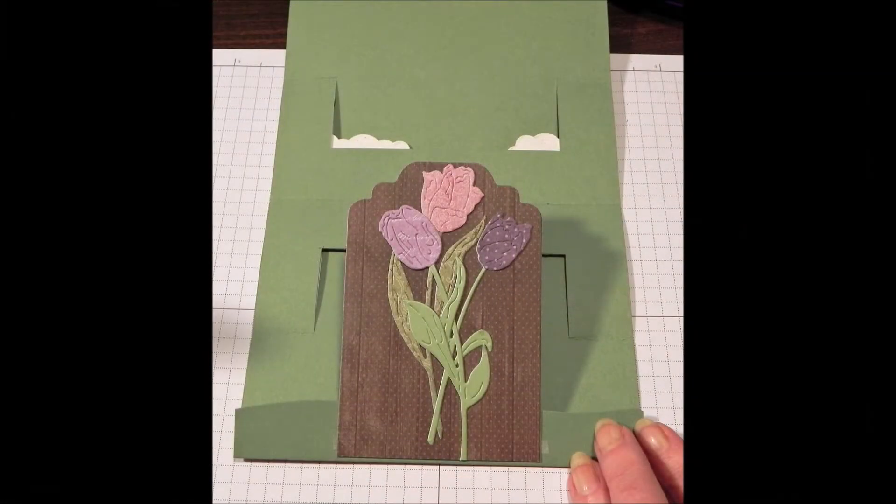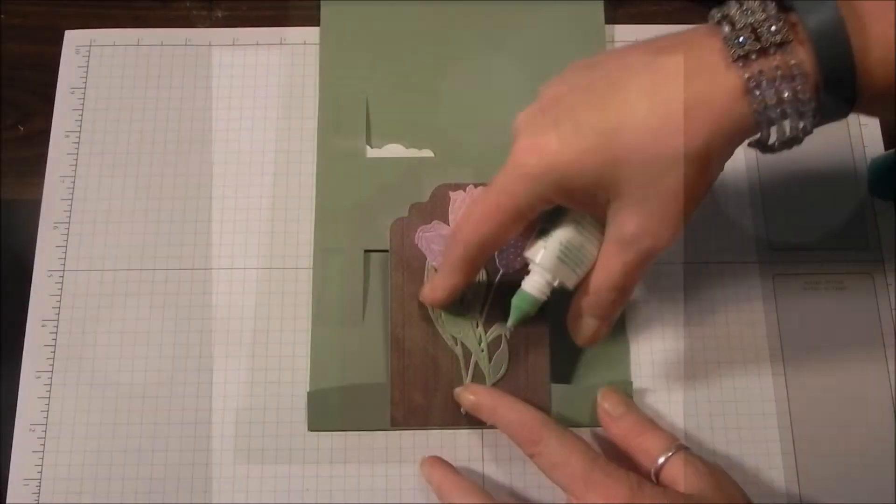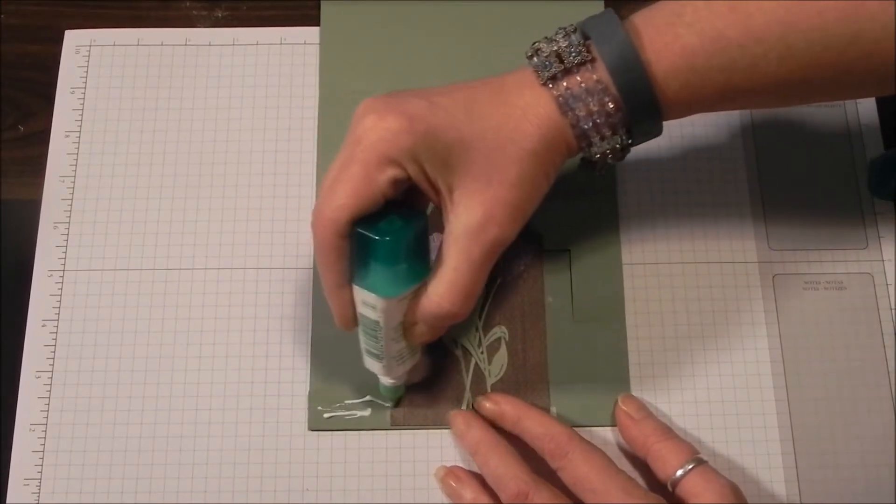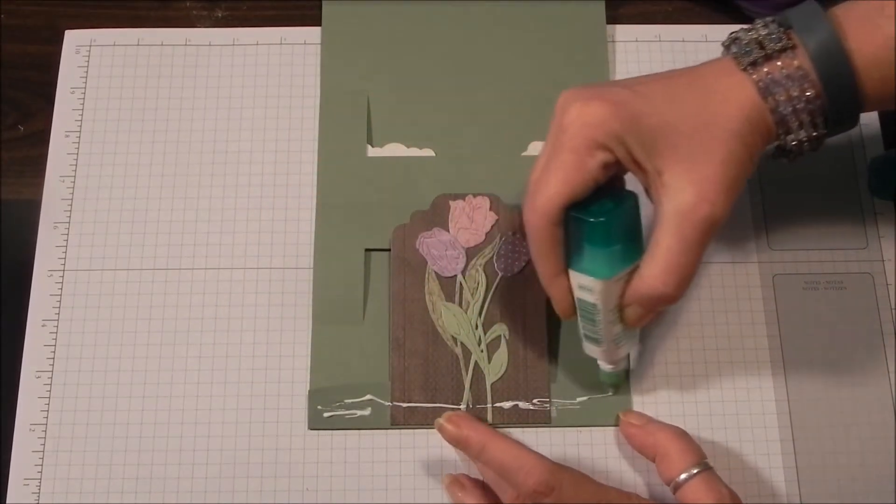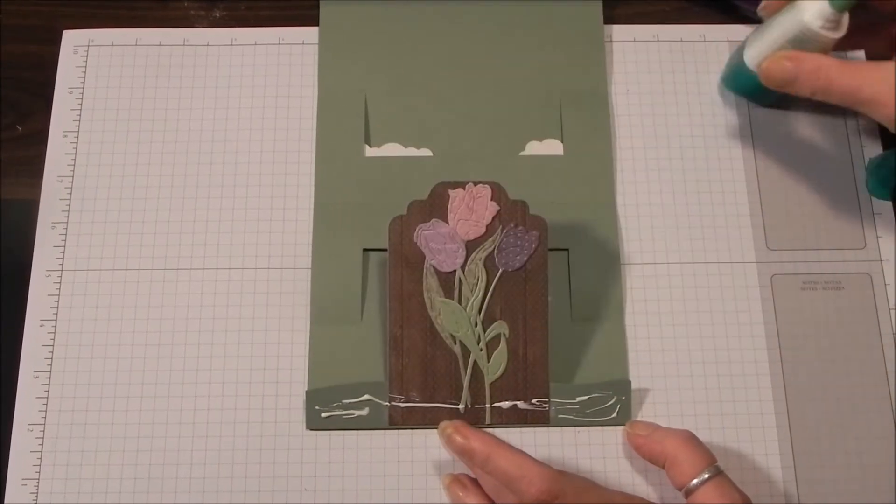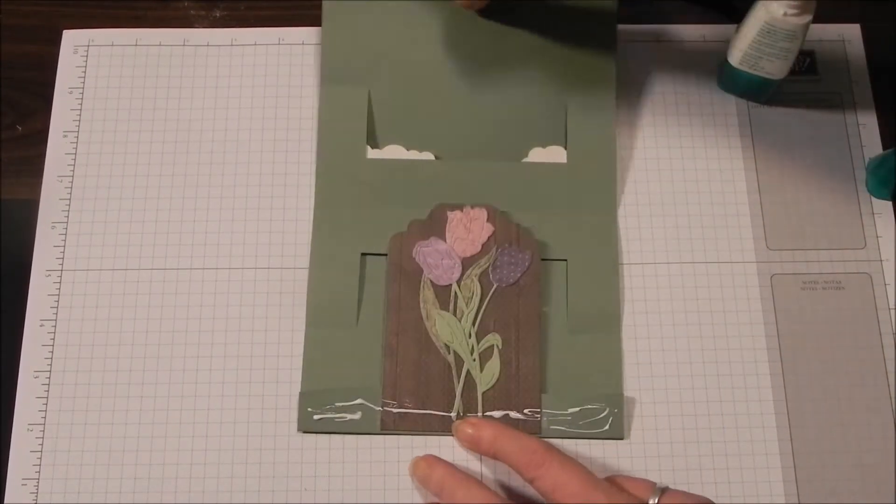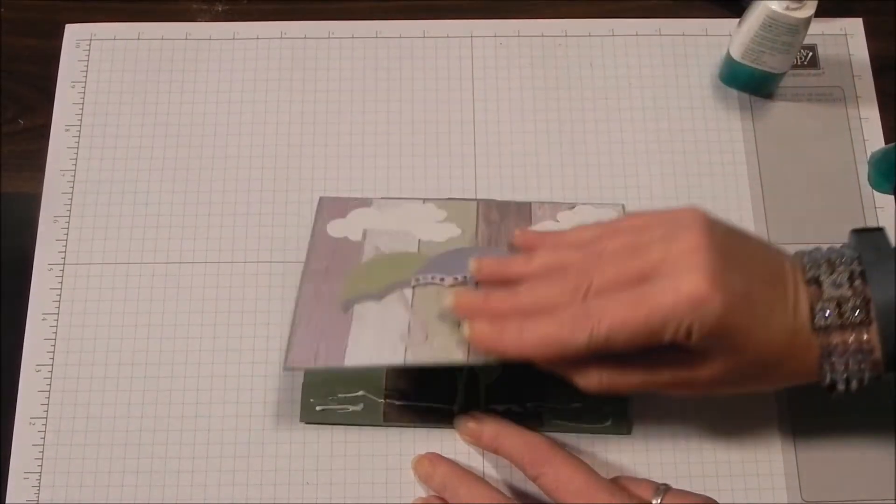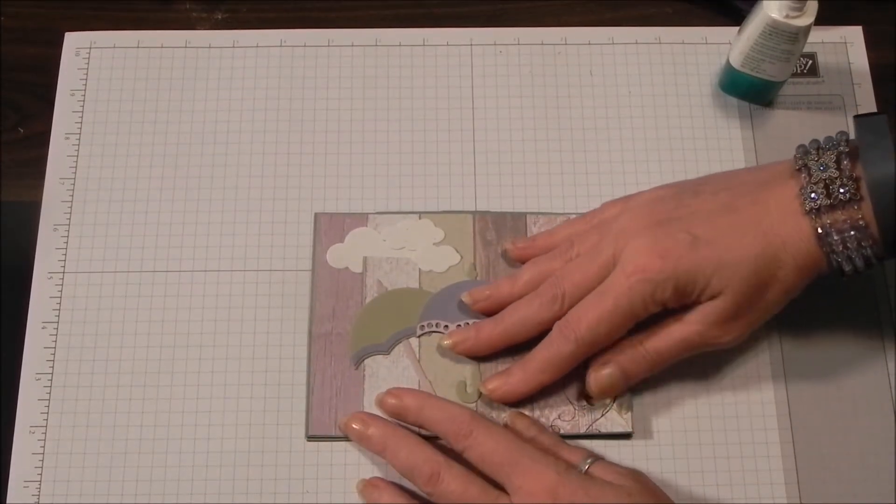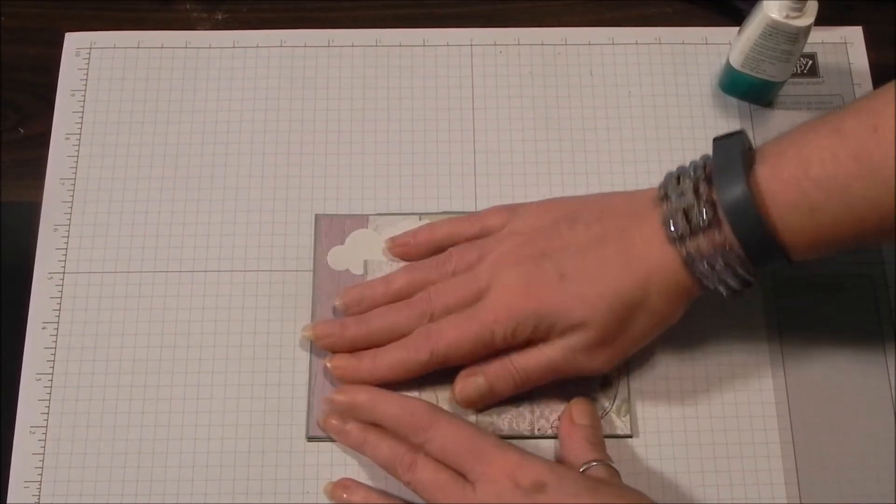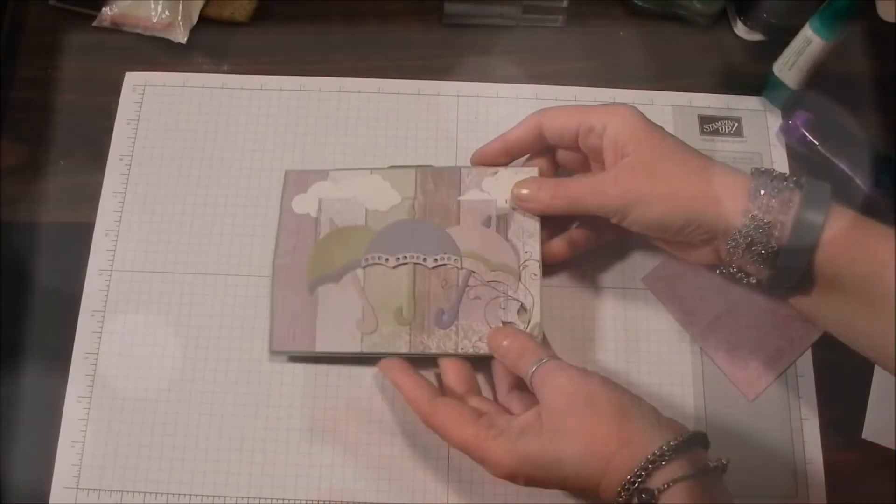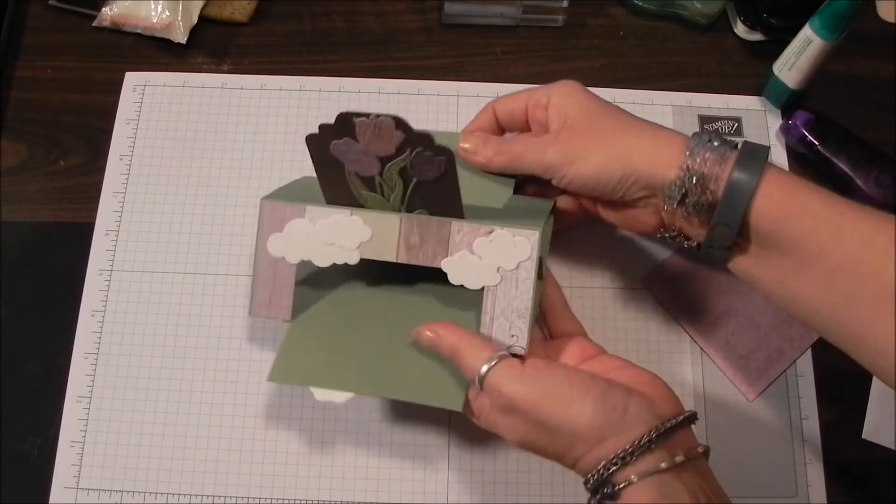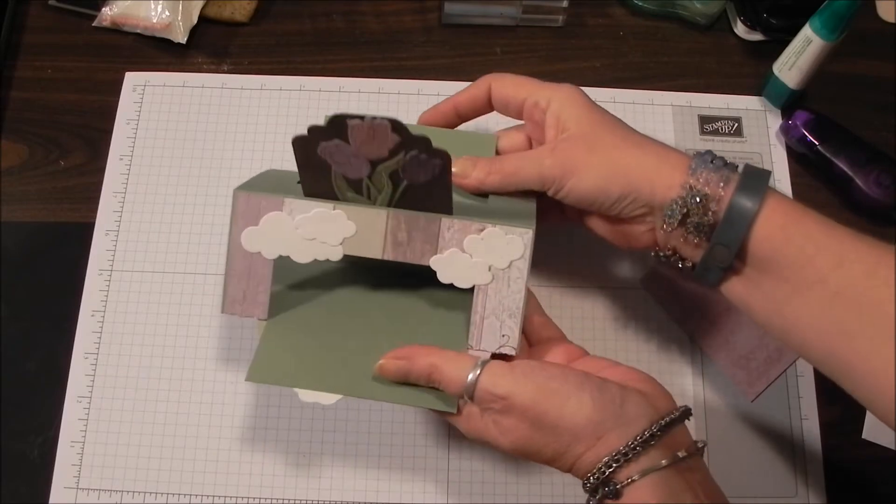I know this whole edge is going to cover all across here. You want to be generous with whatever adhesive you're using because you really don't want this to fall apart. We know since we cut them together that this is exactly going to overlap. Go ahead and tuck this top flap under and have it meet. I'm just going to hold that for a bit and let that set. Once we're at this point, we are just about finished.